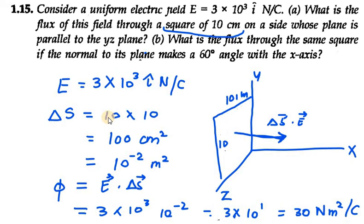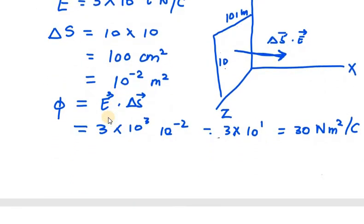Now we need to find what is the flux through the same square if the normal to its plane makes a 60 degree angle with x axis. So I need to redraw the figure and the figure will look like this.